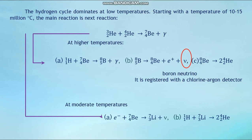The hydrogen cycle dominates at low temperatures. Starting with a temperature of 10 to 15 million degrees Celsius, the main reaction changes. At high temperatures, reactions A, B, C with formation of boron neutrinos are registered with a chlorine-argon detector. At moderate temperatures, reactions A and B occur.